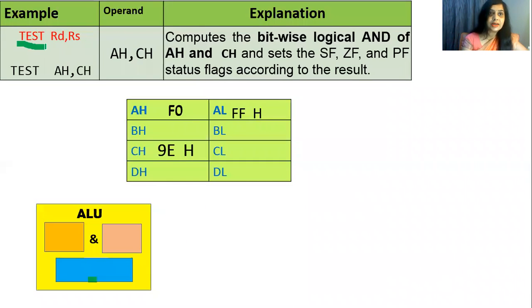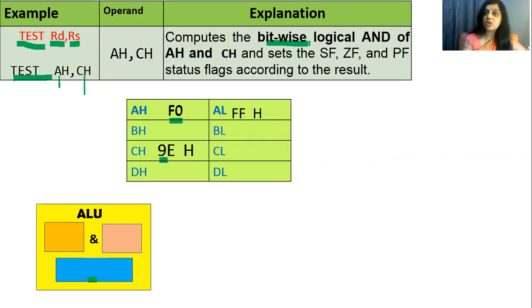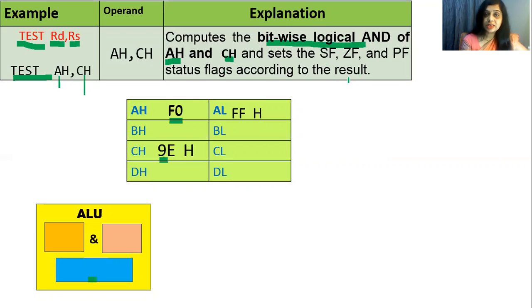The first example is TEST RD, RS — where RS is the source register and RD is the destination register. Here we take the example TEST AH, CH: AH holds F0 and CH holds 9E. This instruction computes a bitwise logical AND of the contents of AH and CH, and sets the sign flag, zero flag, and parity flag according to the result. Remember, the result will not be stored in the destination register.